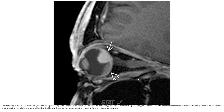This is the sagittal T1 post-contrast with fat suppression in a 56-year-old man presenting with sudden vision loss. It demonstrates an enhancing intraocular mass in the posterior globe, consistent with choroidal melanoma, with associated enhancing retinal distortion and subretinal hemorrhage accounting for the presenting symptoms.